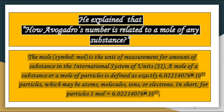He explained how Avogadro's number is related to a mole of any substance. The mole (mol) is defined as the unit of measurement for the amount of substance in the International System of Units (SI). A mole of a substance is defined as exactly 6.022 × 10²³ particles, which may be atoms, molecules, ions, or electrons.